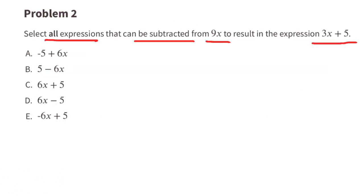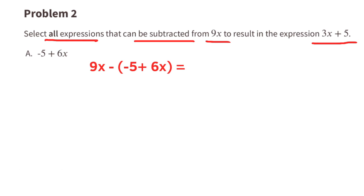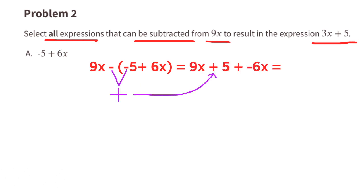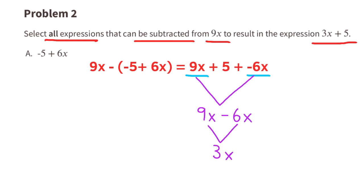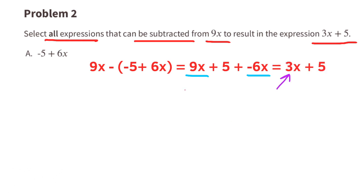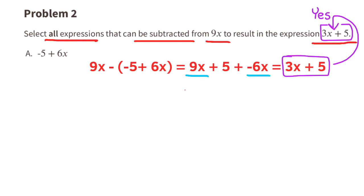Problem number 2. Select all expressions that can be subtracted from 9x to result in the expression 3x plus 5. Option A: a negative times a negative is a positive, and a negative times a positive is a negative. So we can rewrite this as 9x plus 5 plus a negative 6x. We have terms with an x and terms that don't have an x, so we can combine the like terms. 9x minus 6x is 3x, and we're left with 3x plus 5. That matches the original expression perfectly.